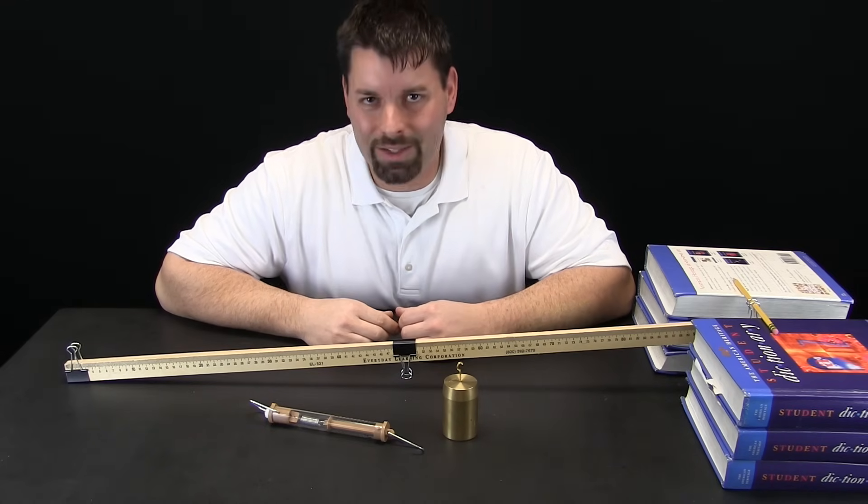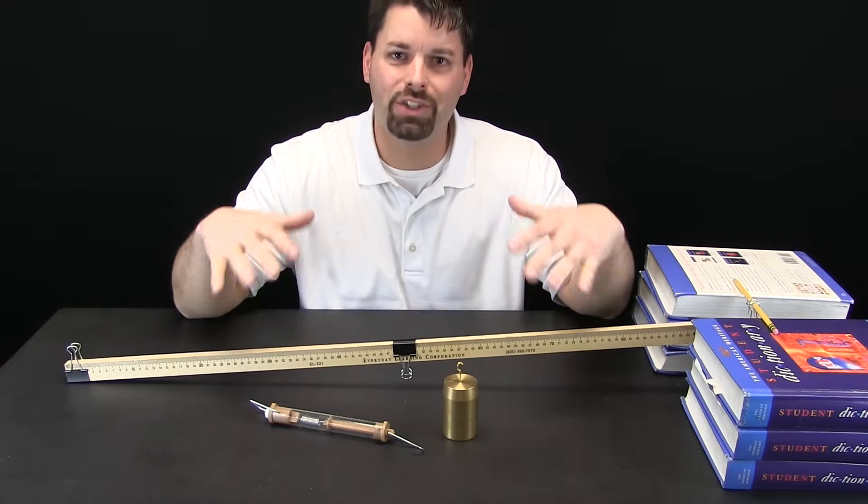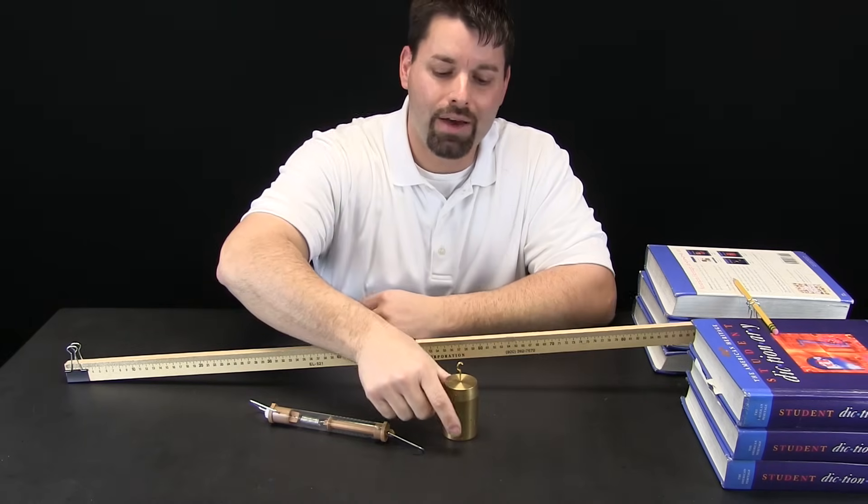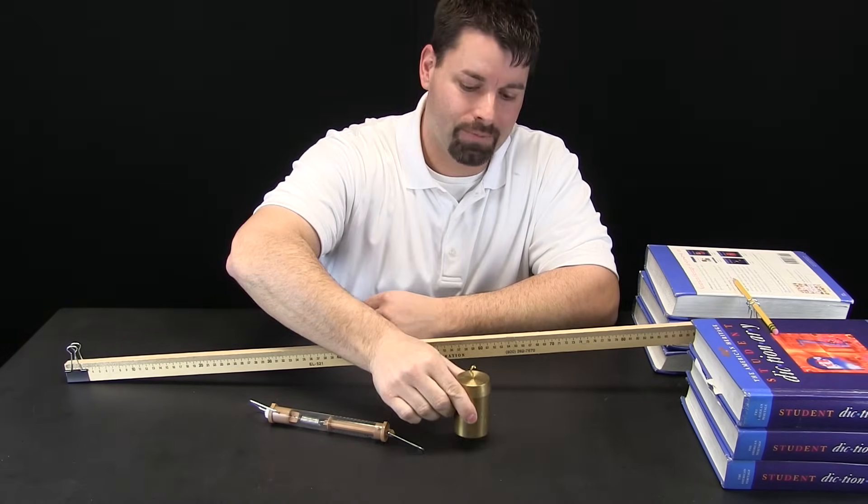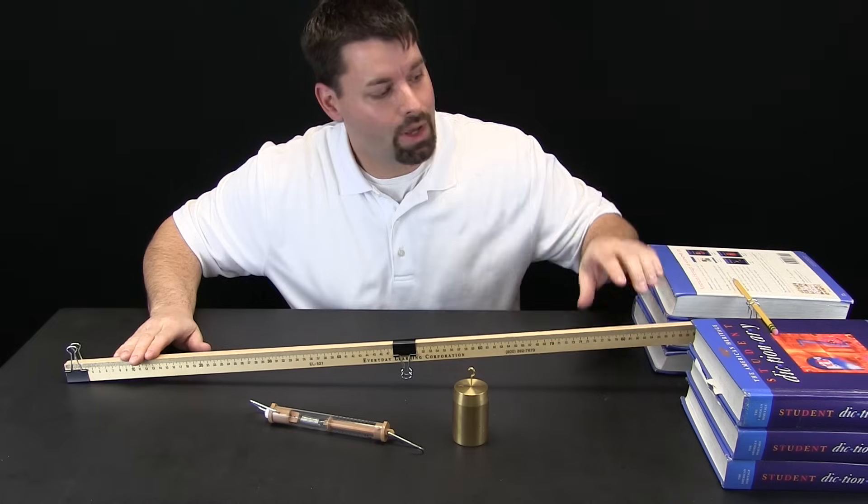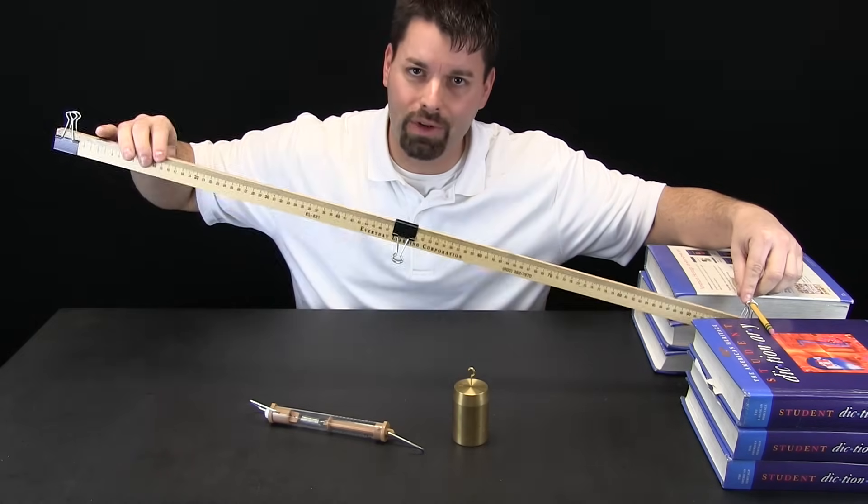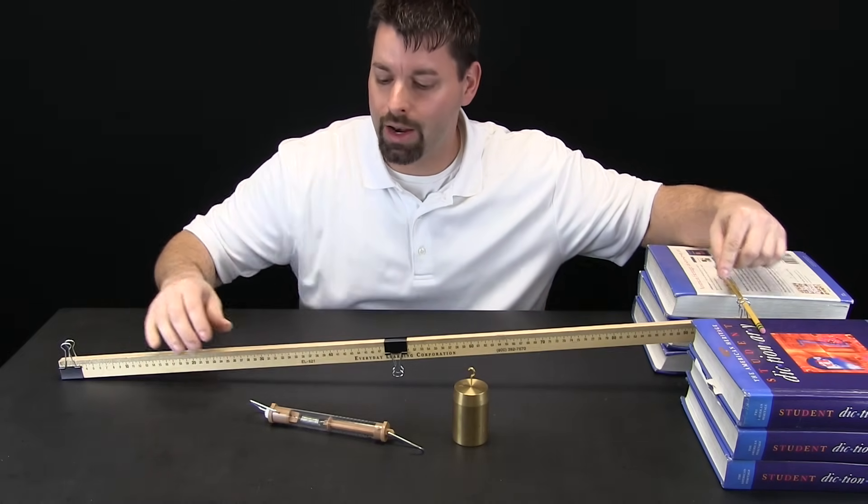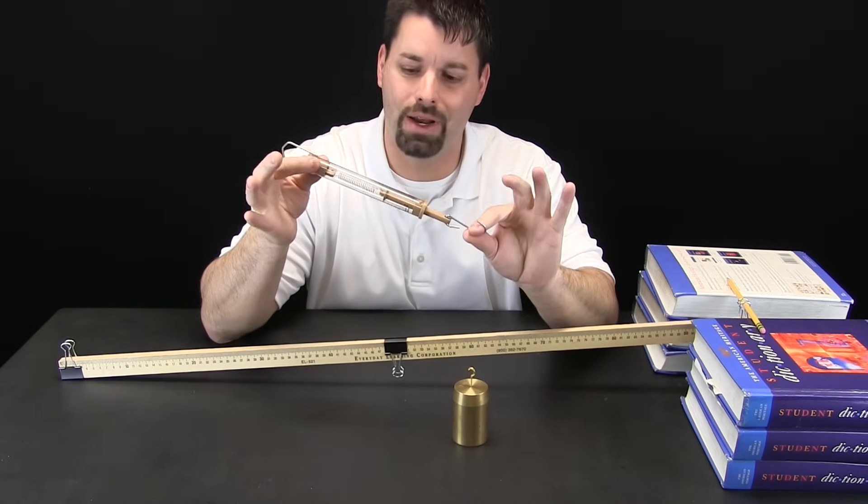Hi, I am Jared. Welcome to Fun Science Demos. So take a look at our setup that we have today. I have a thousand gram weight, I have a meter stick, and right here I have a pivot point. And I have a spring scale that measures up to a thousand grams.